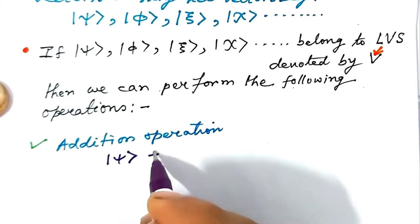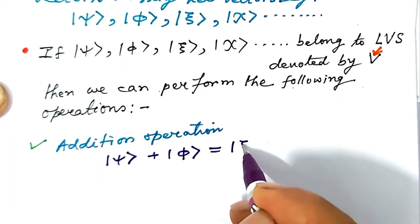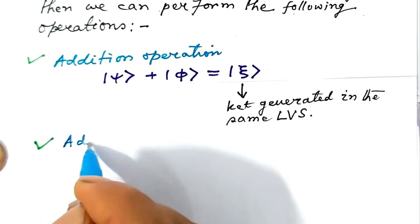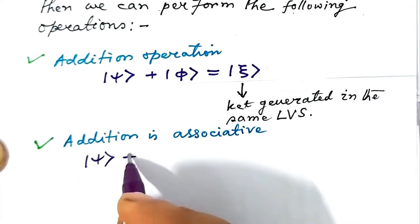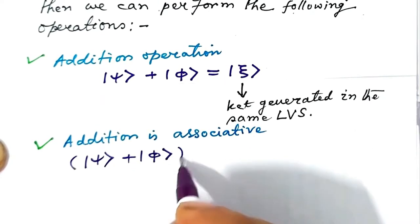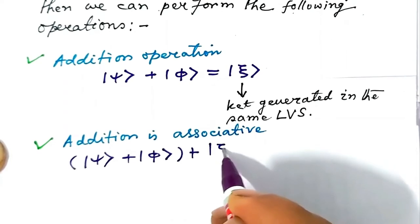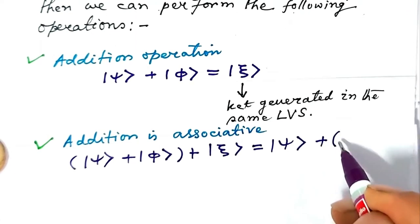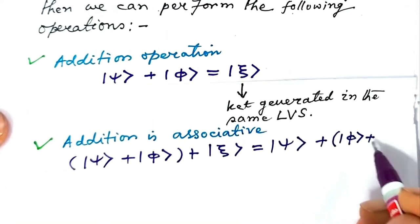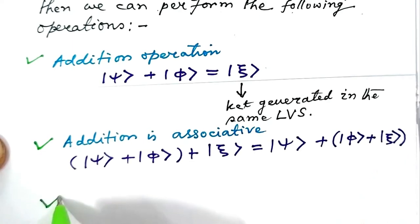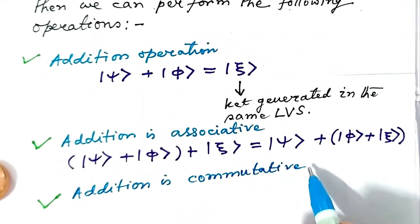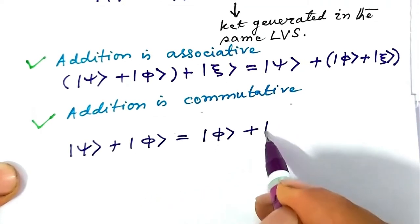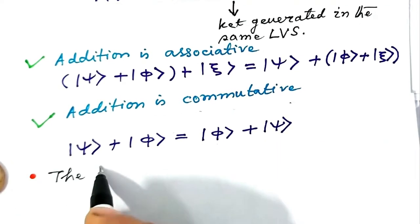Addition operation: ket-psi plus ket-phi equals ket-xi, which is a ket generated in the same linear vector space. Addition is associative: adding ket-psi and ket-phi first, then adding the sum to ket-xi, gives the same result as adding ket-phi and ket-xi first and then adding to ket-psi. Addition is commutative: ket-psi plus ket-phi equals ket-phi plus ket-psi.